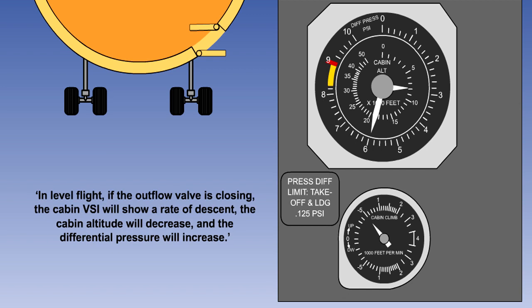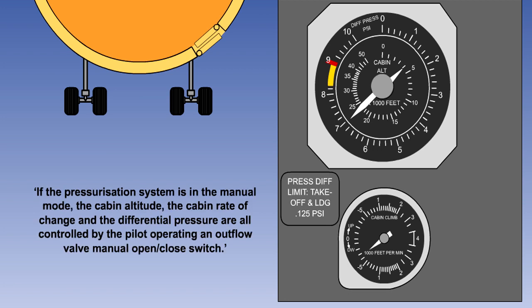Similarly, in level flight, if the outflow valve is closing, the cabin VSI will show a rate of descent, the cabin altitude will decrease, and the differential pressure will increase. If the maximum differential pressure is exceeded, then the positive pressure relief valves will open. Finally, remember that if the pressurization system is in manual mode, the cabin altitude, the cabin rate of change, and the differential pressure are all controlled by the pilot operating an outflow valve manual open-close switch.